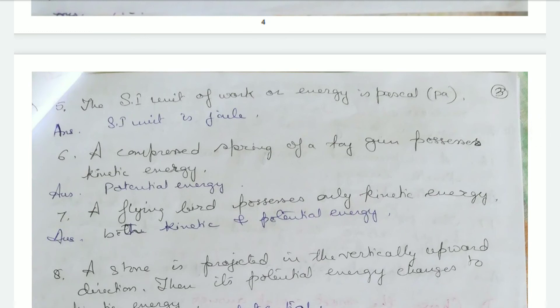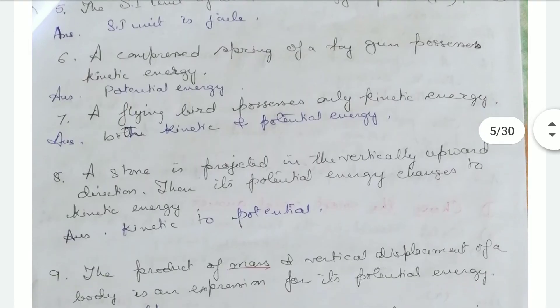The SI unit for work or energy is pascal — correction: the SI unit is joule, not pascal. A compressed spring of a toy gun possesses kinetic energy — correction: it possesses potential energy. A flying bird possesses only kinetic energy — correction: it possesses both kinetic and potential energy.